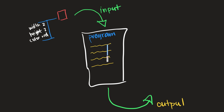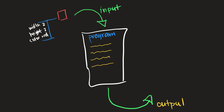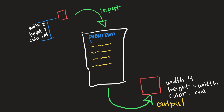We'll say the color is red. This object goes into our program as input, and the spells provided by our programming language are represented by each one of these lines. After we perform all of these steps, we output the square — which may or may not have been modified. For example, maybe we just made the square larger.